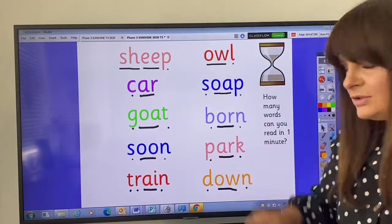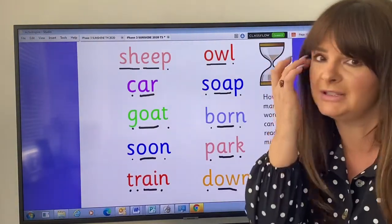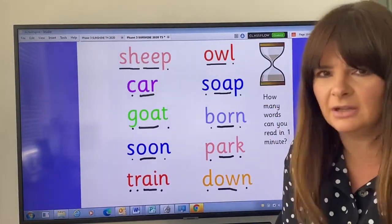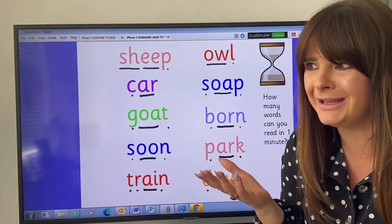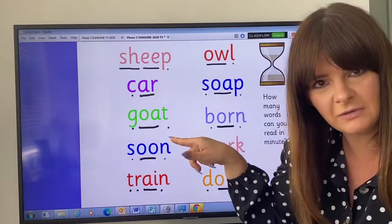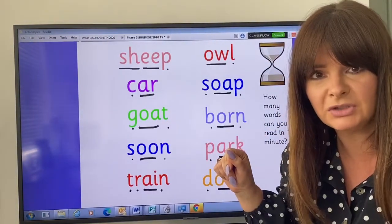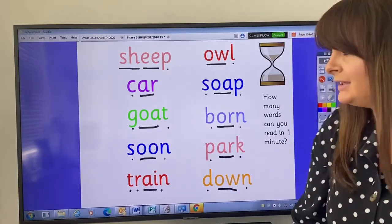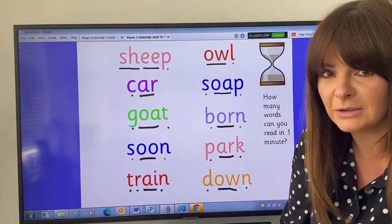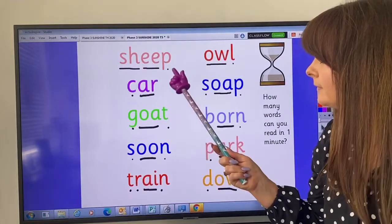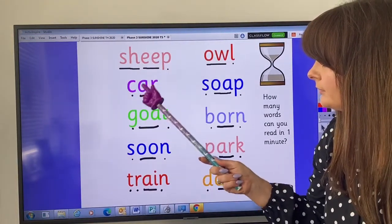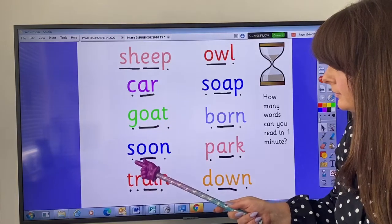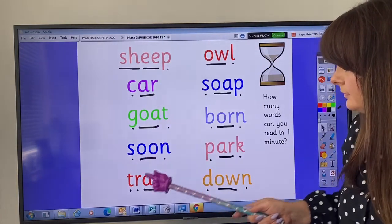Now another thing that we often do in reception is we have a list of words to read down. These have the sounds in that we already know really well. Now normally we would have a timer, wouldn't we, and we beat the timer every time. I don't have the timer with me, sillily I left it at school. So we're just going to go down this list together, but if you want to time yourselves you can do that and see if you beat the timer. See if you can beat one minute.